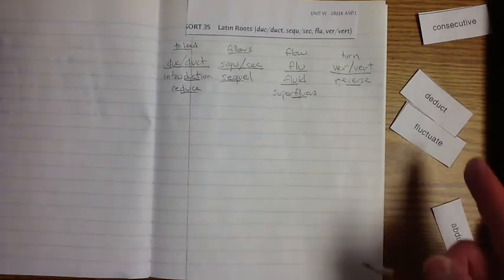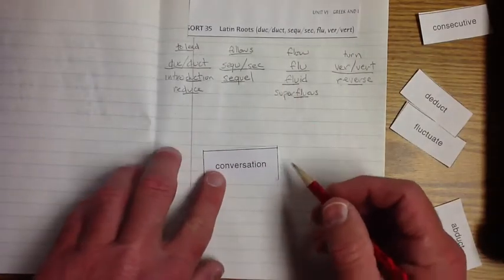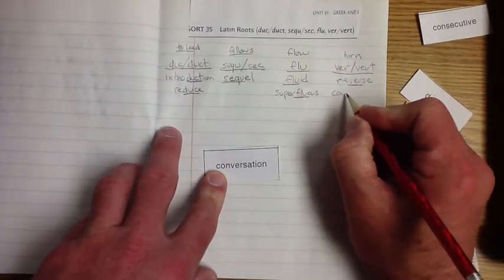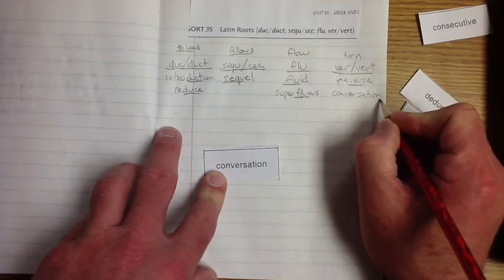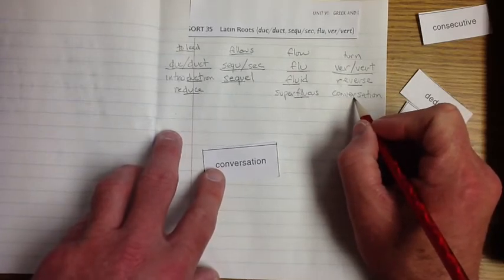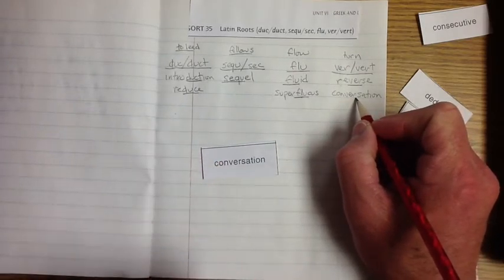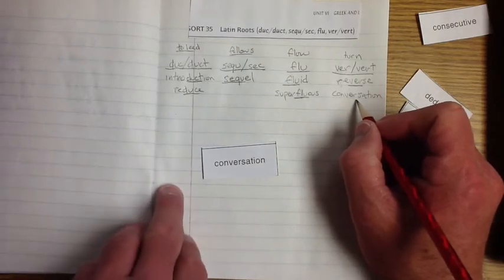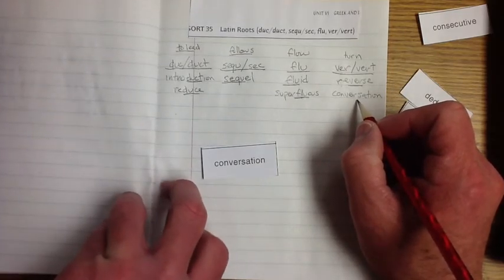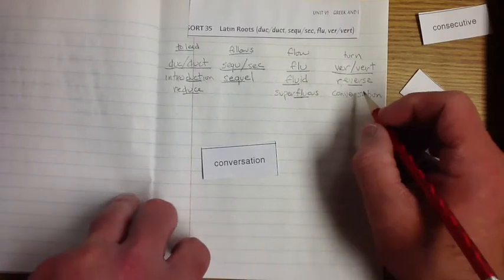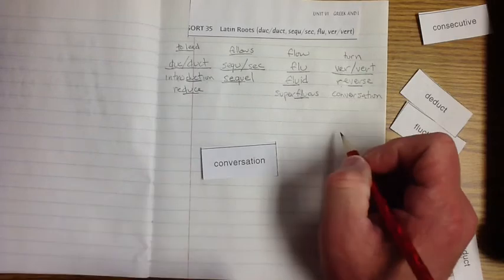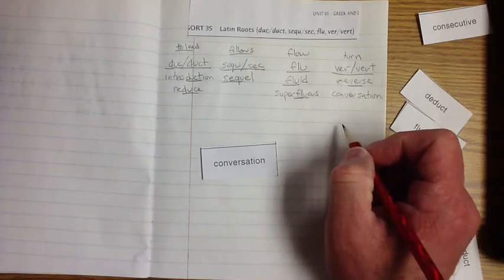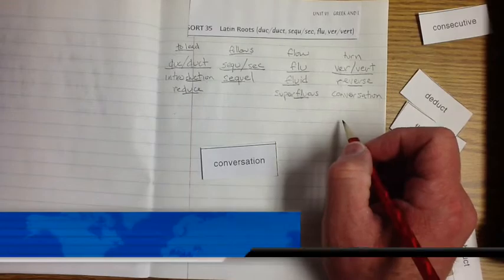And so we're going to do one more. I think we've got it. Oh, there it is. Conversation. Con-ver-sa-tion. Shun means the nature of. Ver means to turn. So when we're doing a conversation, we're actually, what? Talking. Taking turns. We're taking turns in a conversation. That's pretty cool, isn't it? Huh. All right.